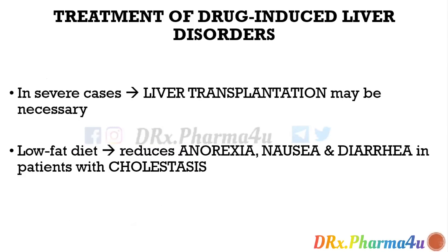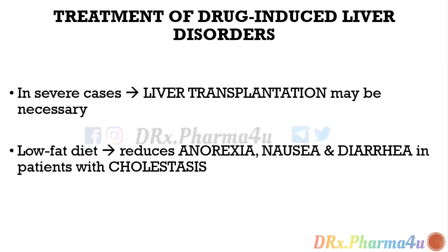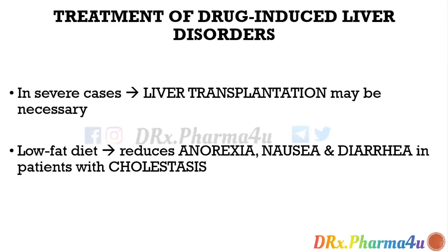In severe cases, if nothing is working — liver enzymes are drastically high, plasma ammonia level is also very high, and the patient is going into very poor prognosis — then the healthcare team will have to discuss with the liver transplantation team and make a consensus on whether the patient is a suitable candidate for liver transplantation. In very severe cases, liver transplantation may be necessary to save the patient's life.